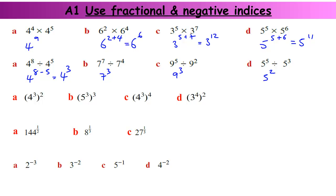Powers of powers — we multiply these powers. So 4 to the power of 3 times 2, which is 4 to the power of 6. 5 to the power of 3 times 3, which is 9. 4 to the power of 3 times 4, which is 12. And 3 to the power of 4 times 2, which is 8.